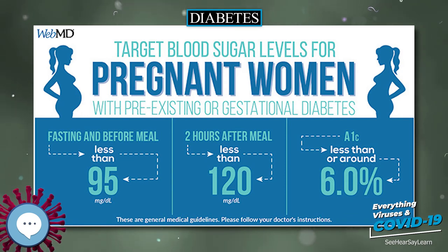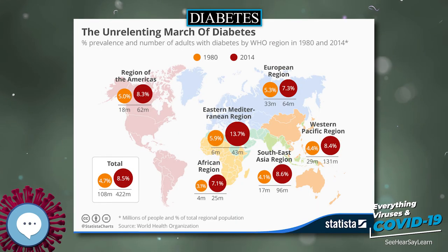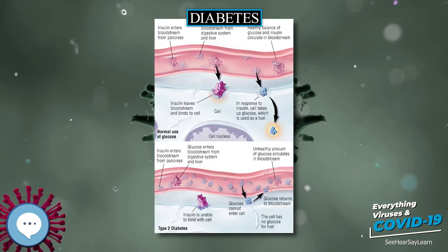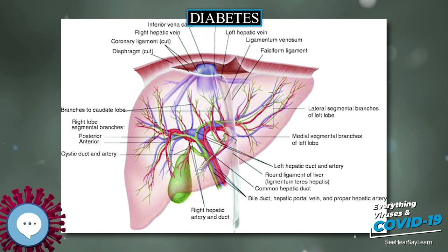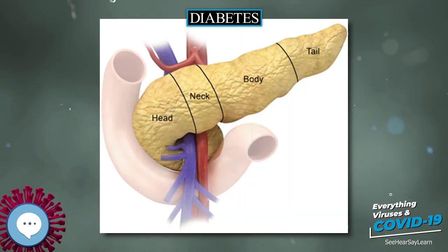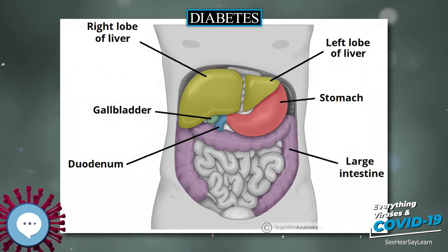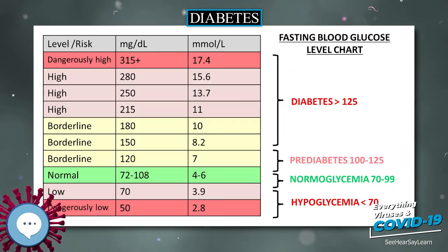Most medications used to treat diabetes act by lowering blood sugar levels through different mechanisms. There is broad consensus that when people with diabetes maintain tight glucose control, keeping the glucose levels in their blood within normal ranges, they experience fewer complications like kidney problems and eye problems. There is, however, debate as to whether this is appropriate and cost-effective for people later in life where the risk of hypoglycemia may be more significant. Type 1 diabetes can only be treated with insulin, typically with a combination of regular and NPH insulin or synthetic insulin analogs. Type 2 diabetes may also be treated with insulin at later stages.